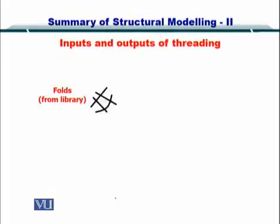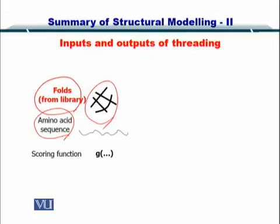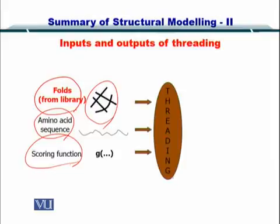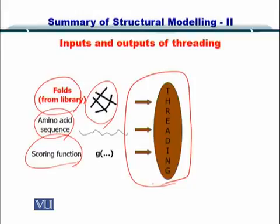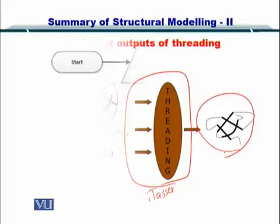In fold recognition you start by looking at folds from a library. These folds are then investigated individually for the possibility of being formed by the amino acid sequence. A protein may have multiple folds. Here is your amino acid sequence, here is your scoring function, and all of that is put into the threading algorithm. The most common tool for threading is I-TASSER, and then the threading software outputs the predicted structure.